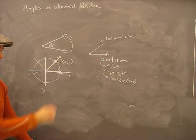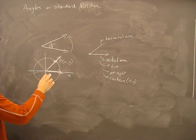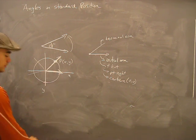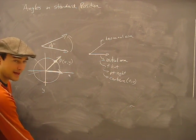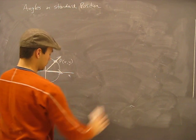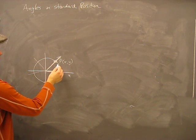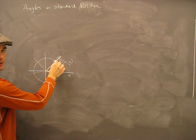There's something called co-terminal angles. I'll just briefly touch on that. I think it'll come up later. Co-terminal angles are any angle where this point will be connected with again.